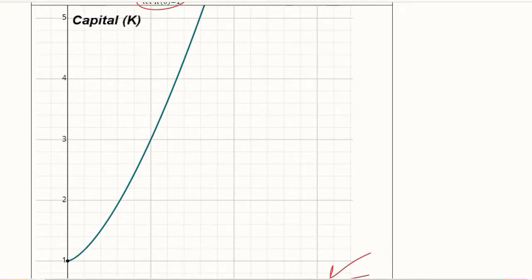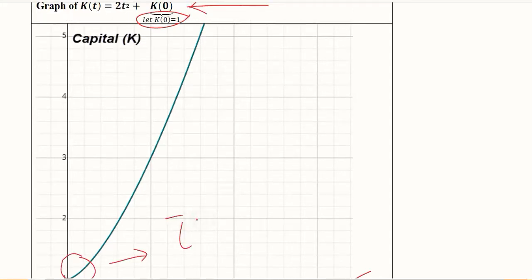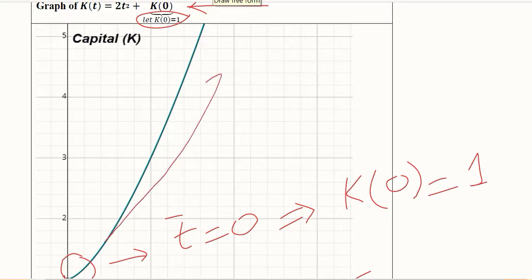This is 1, this is 1, this is the intercept here. Time is equal to 0, so when time is equal to 0, there is a little bit of capital which is equal to 1 unit. And after that, you can see the graph is increasing as time is passing.